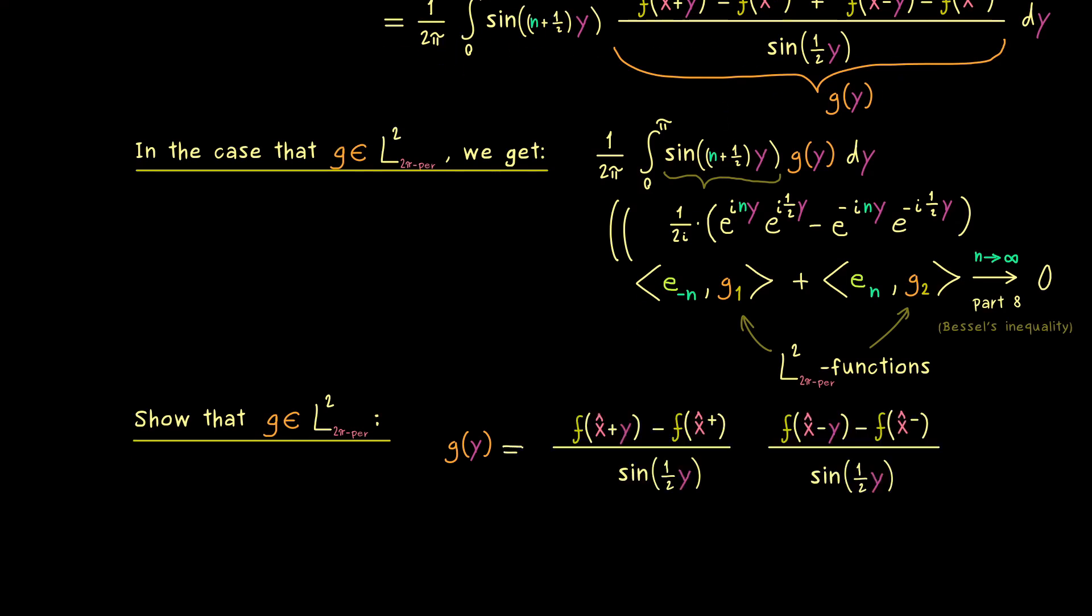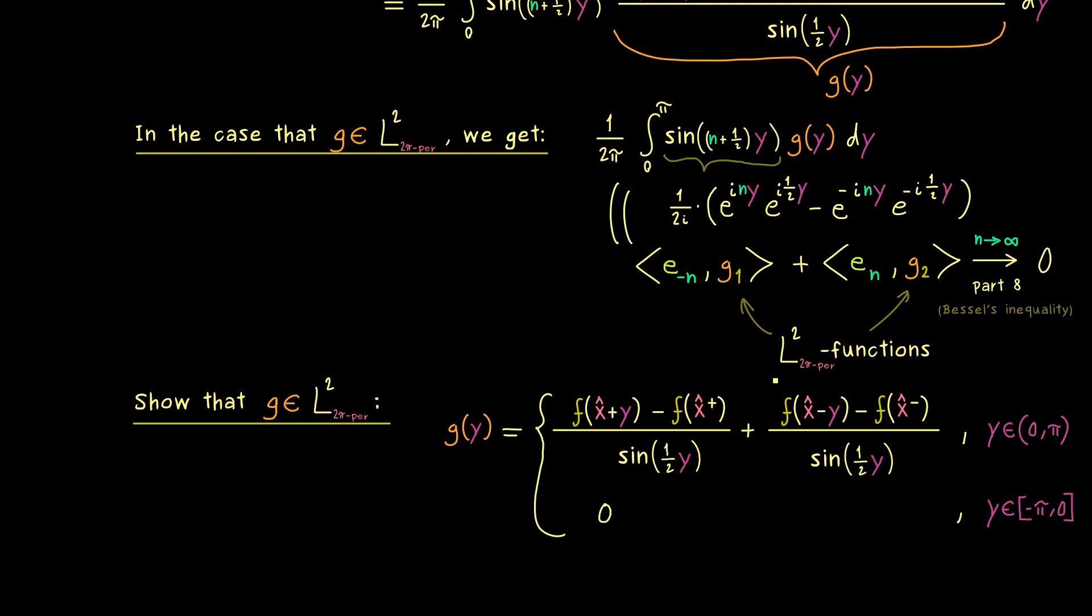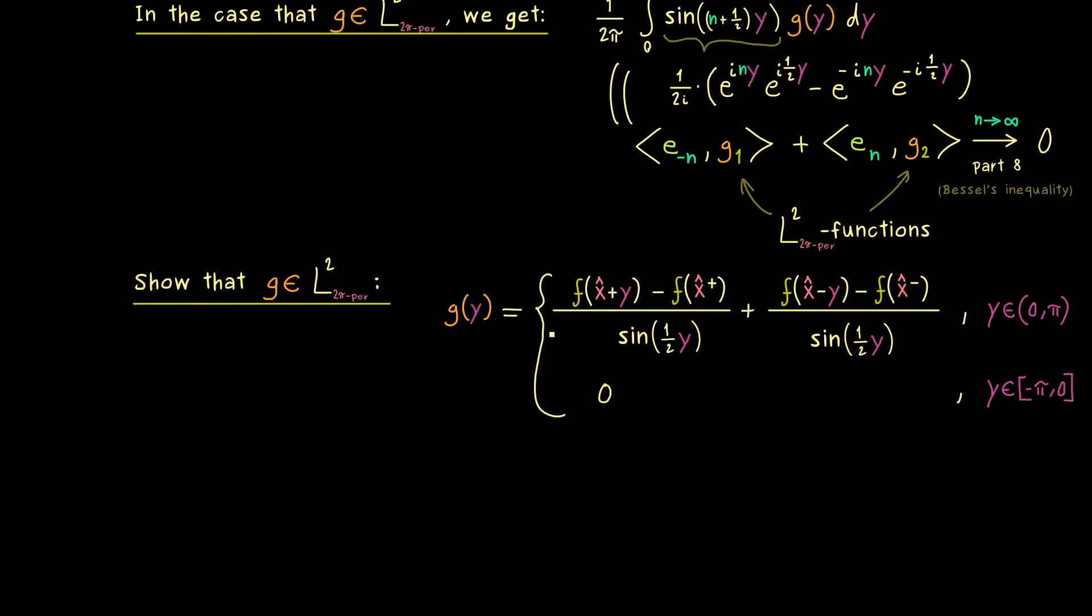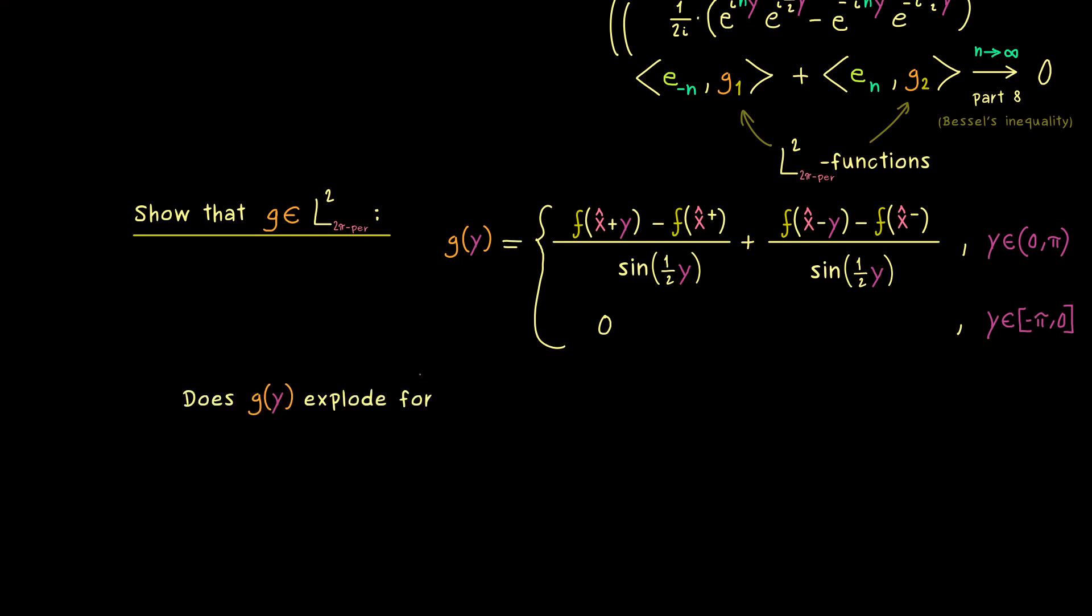So the first step we do here is to split up the function again into the two parts that matter. And again as a reminder this first definition only holds in the interval from 0 to plus π. And there we see again we don't have any problems if we go outside a neighborhood of 0 because there we just have our function f which is an L2 function. So the only question is does g(y) explode when we go with y to 0 from the right hand side.